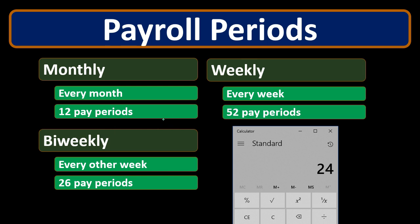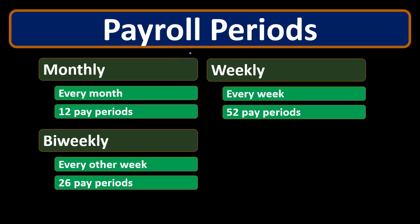That number of 26 comes from 52 weeks in a year divided by 2. So 26. What you really want to do is memorize the weekly and monthly numbers. Then when you get to biweekly, you take the weekly amount — 52 — and divide it by 2 to get to 26.